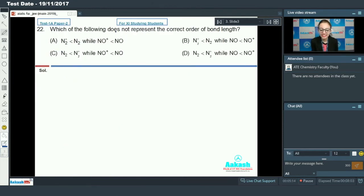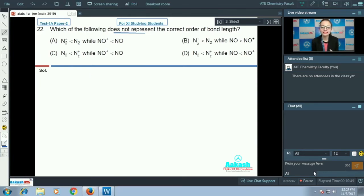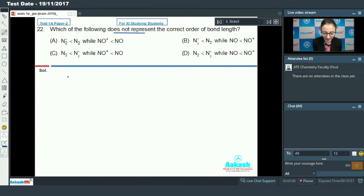Next question: which of the following does not represent the correct order of bond length? We just saw that bond length is inversely proportional to bond order. So, first let's find the bond order of all these species: N2+, N2, NO+ and NO. According to molecular orbital theory, bond order of NO+ is 2.5 and bond order of N2 is 3. Bond order of NO+ is also 3 and bond order of NO is 2.5.